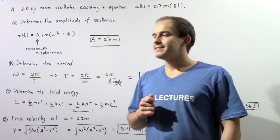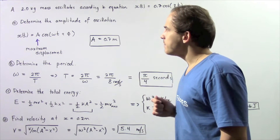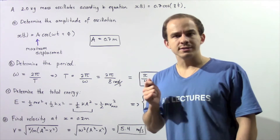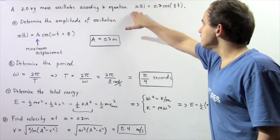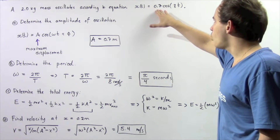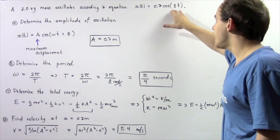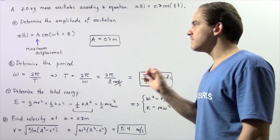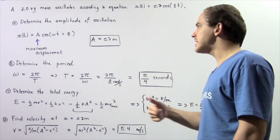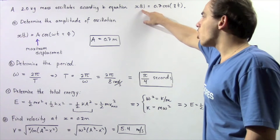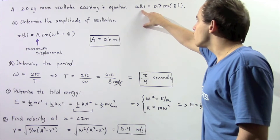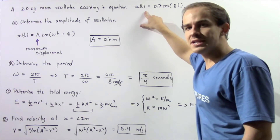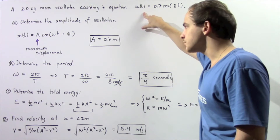Let's look at the following example. A 2 kg mass oscillates under simple harmonic motion according to the equation X(t) = 0.7·cos(8t), where X(t) is the position of our object during its oscillation pathway at some arbitrary time t. If we plug in a time t, it will give us the position of our object in meters.